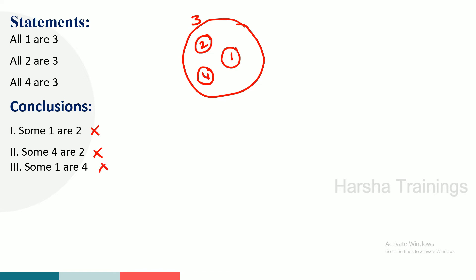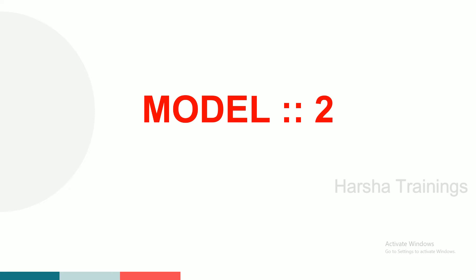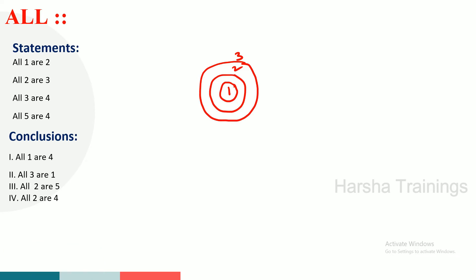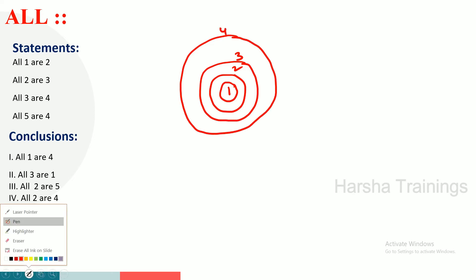Is it clear, guys? Coming to model number 2. Previous problems done, now moving to model number 2. Statements: all 1 are 2, all 2 are 3, all 3 are 4, all 5 are 4. All 1 are 2, next all 2 are 3, next all 3 are 4, and last statement all 5 are 4. 5 and 3 have a relation only through 4.